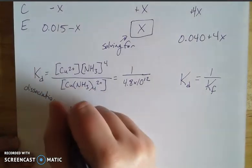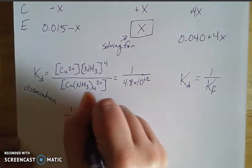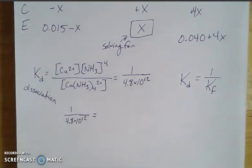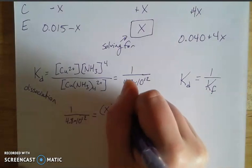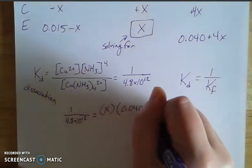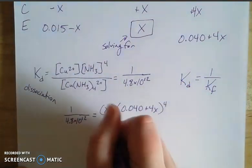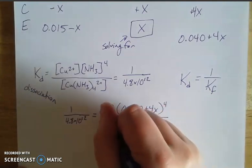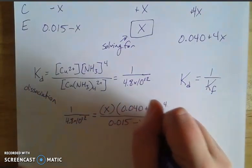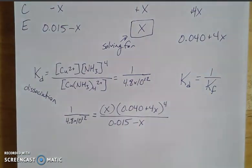So we have our Kd value, which we'll just keep as the inverse for clarity's sake. It's going to be a tiny number. And then our concentration of our copper is going to be X. For our ammonia, it's going to be that 0.040 plus 4X raised to the 4th power. And then that is all over 0.015 minus X for my concentration of my complex ion. Now this looks kind of ugly with the way that I've written it. But because this number is so tiny, this is going to be on the order of 10^-13 compared to these concentrations, which are on the order of 10^-1. There's such a big difference between these concentrations and this value that these X's are going to drop out.